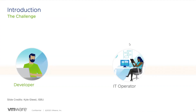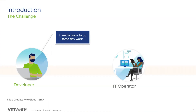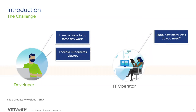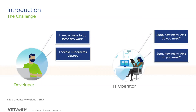On this slide, I have a developer who is ready to develop, and he or she needs a place to do their development. He's asking, I need a place to do some development work. On the right side, I have an IT operator. She's asking, how many virtual machines do you need? Because that is all she can provision, and that is all she cares for — she cannot translate that workload into virtual machines. So the developer asks, I need a Kubernetes cluster, because that is what he understands and needs for his development work.